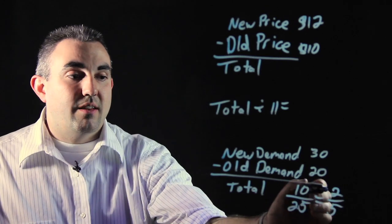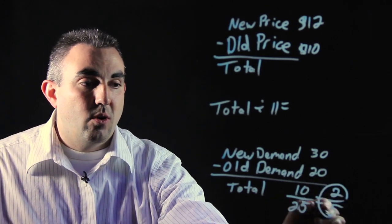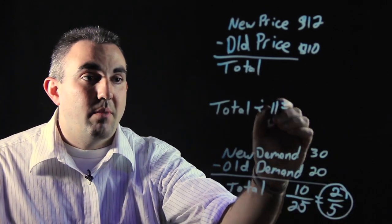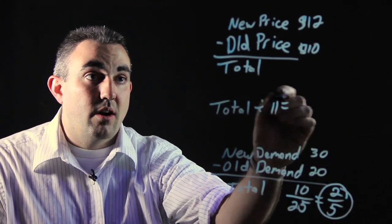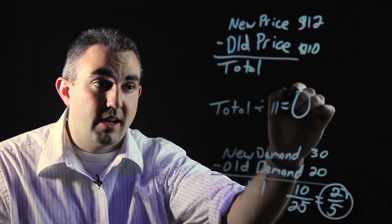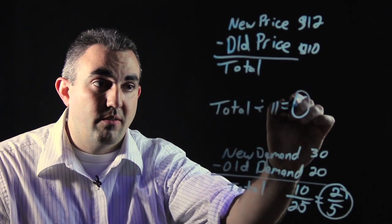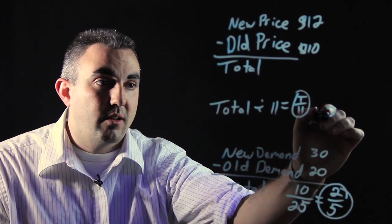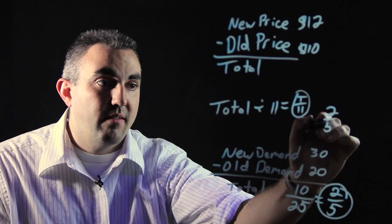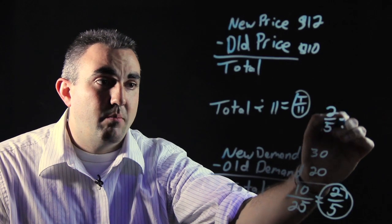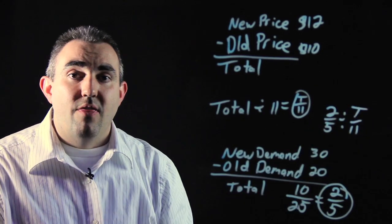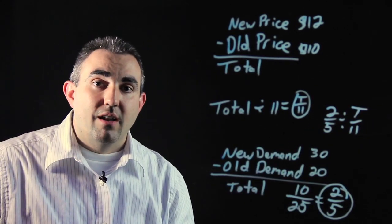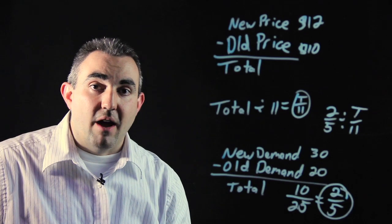Then you take the demand quotient here, divided by your price quotient, which you're going to get from the total divided by 11. So it's going to be 2 over 5 divided by your total over 11. That will give you your elasticity amount.